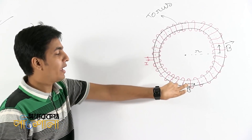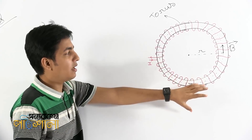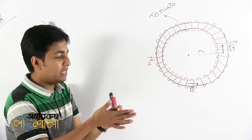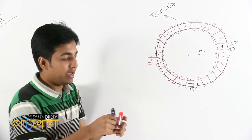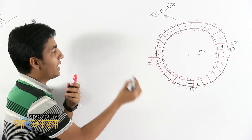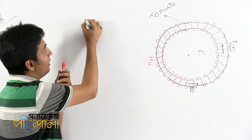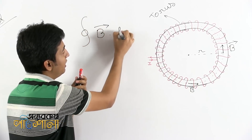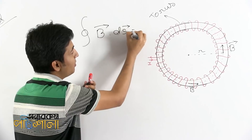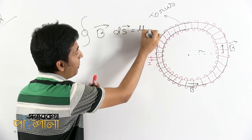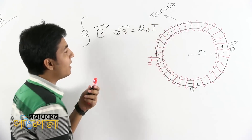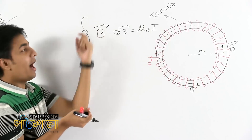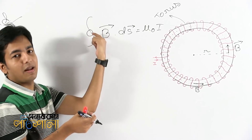If we are able to represent Ampere's law, then we can see how it works. Let's recap once more. Ampere's law is very important. B dot ds is equal to mu naught i. We have to use the closed loop line integral.